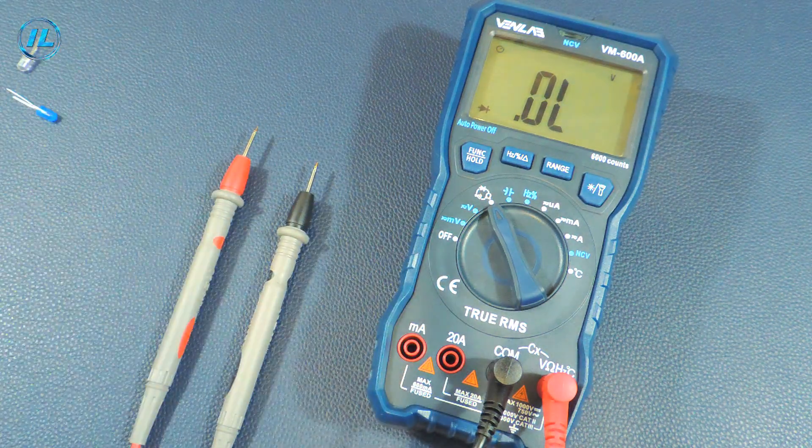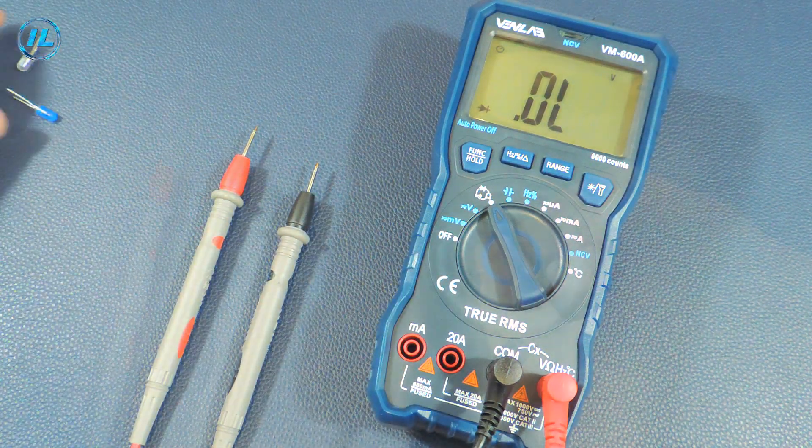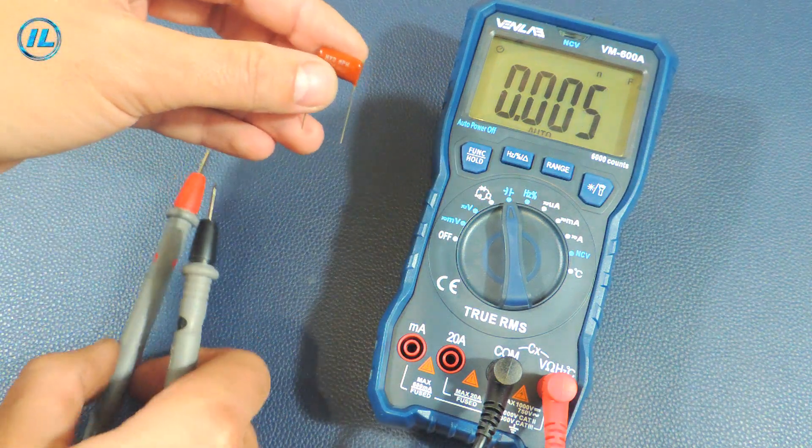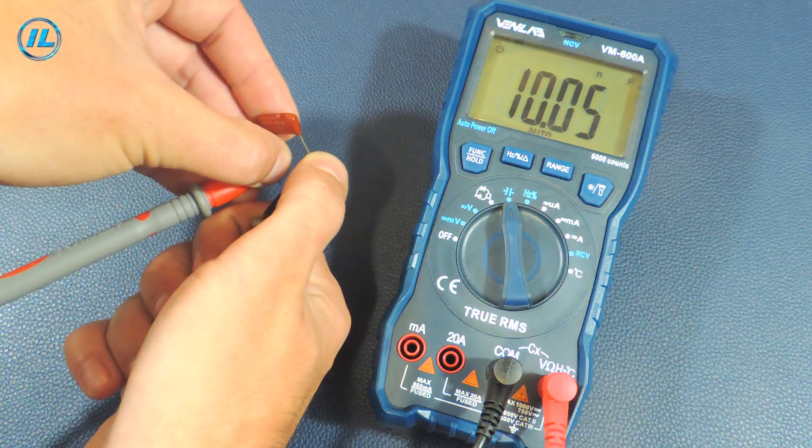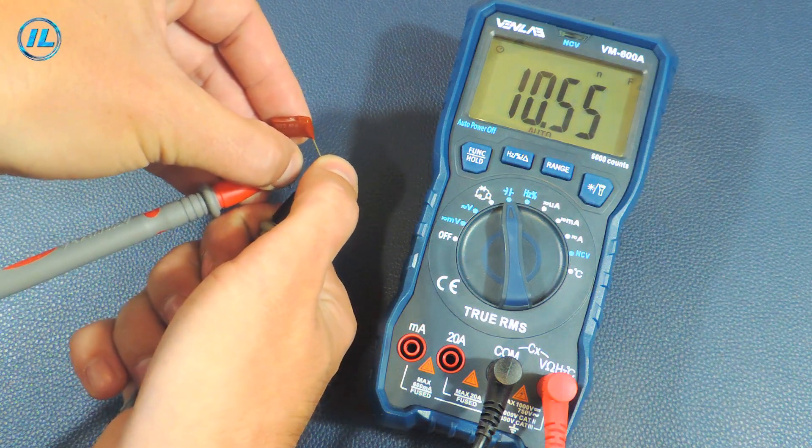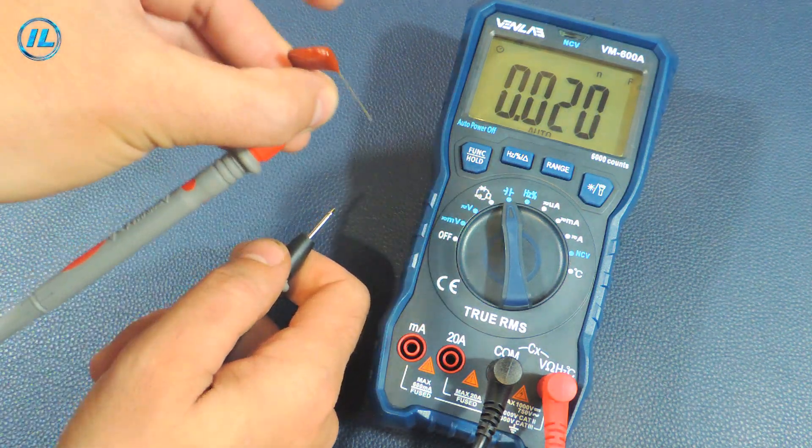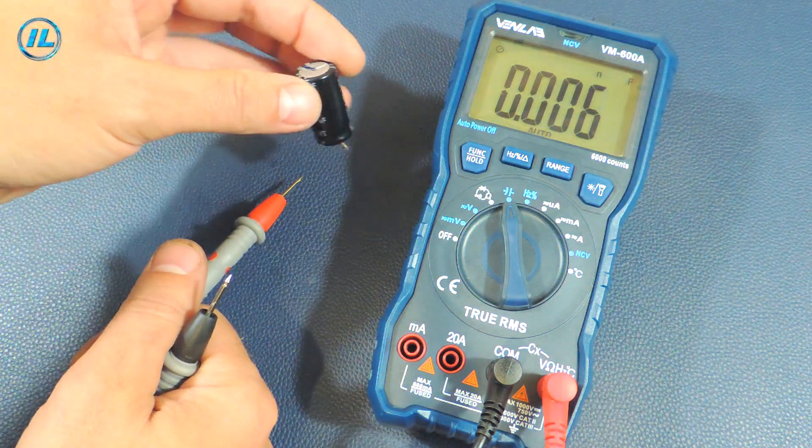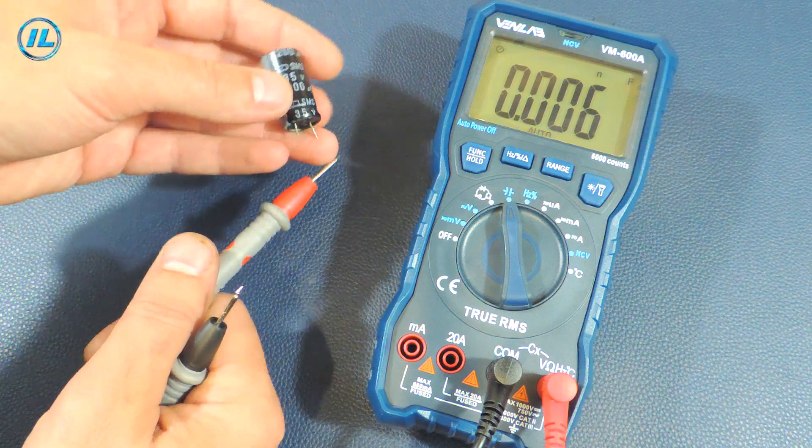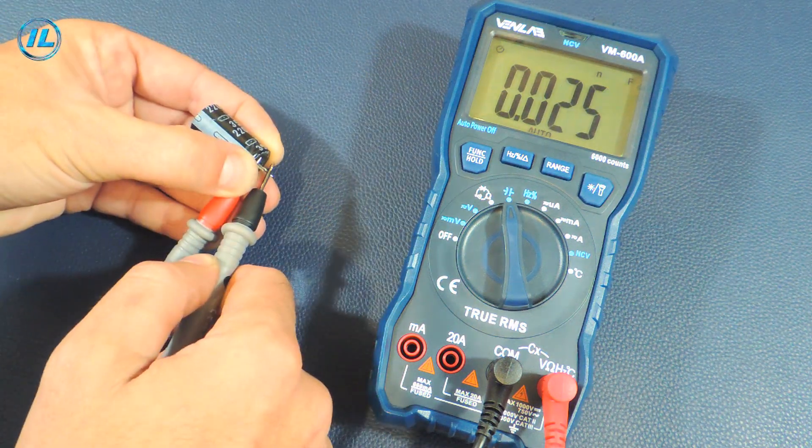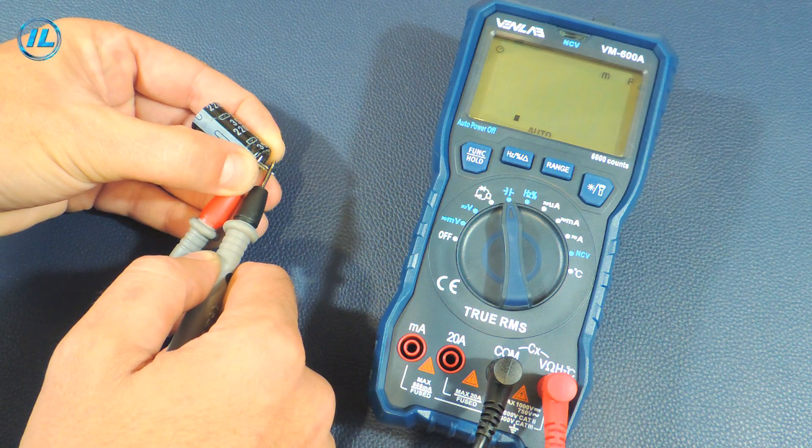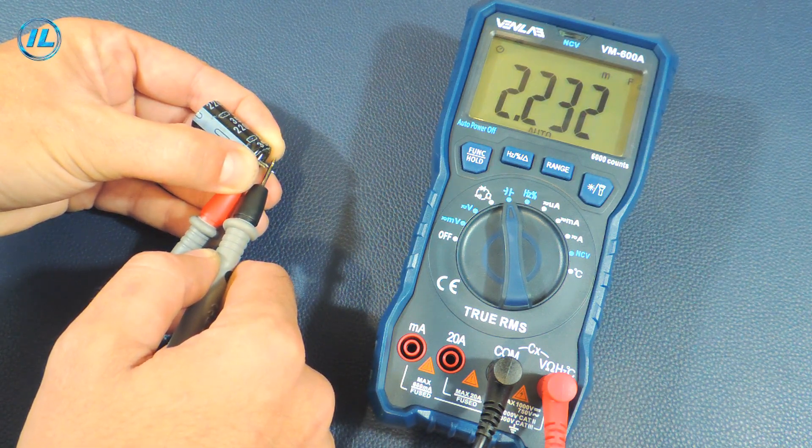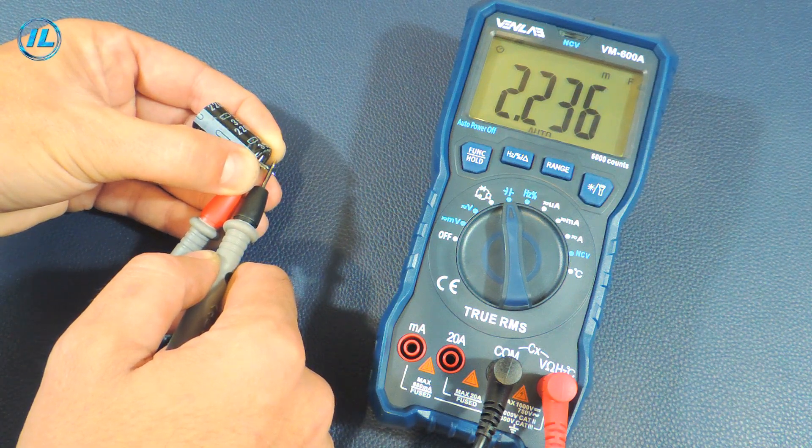Perfectly, the multimeter copes well with checking the LEDs. The next mode is capacity measurement. A 10 nanofarad capacitor. That's right, 10 nanofarads. The device accurately determines this capacity without any delay. Another electrolytic capacitor for 2200 microfarads. To measure such a capacity the multimeter took about five seconds. The result is 2200 microfarads.